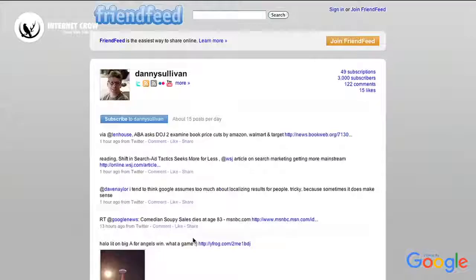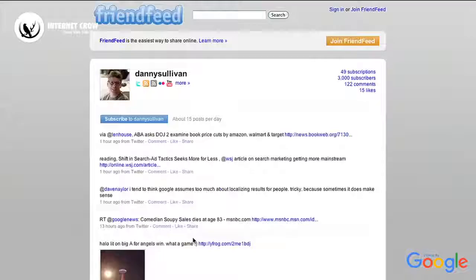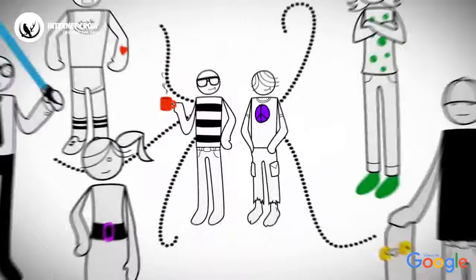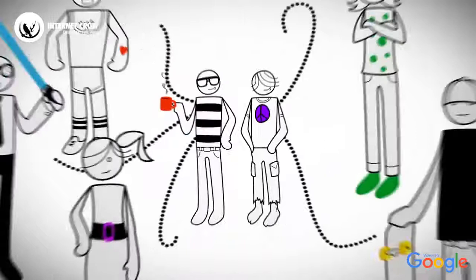For example, I'm following Leo Laporte on Twitter, and on FriendFeed, I follow Danny Sullivan. There's also an extended social circle, which is the set of people that Leo and Danny follow.